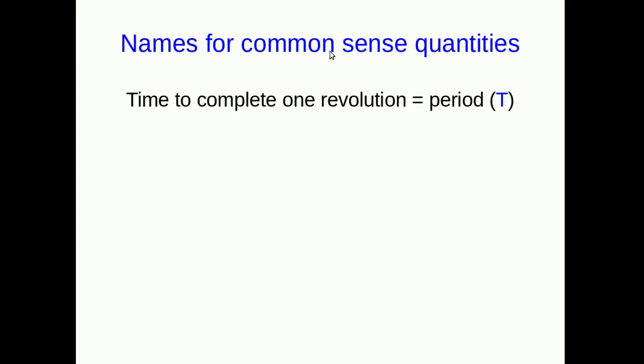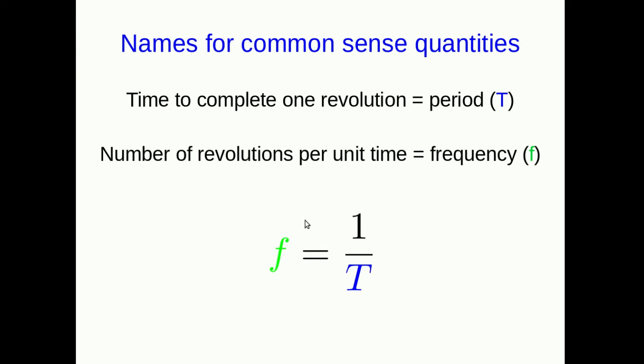We can just see that they always must be related this way. The frequency is just the period turned on its head, one over the period. So we have these common sense quantities for describing revolutions: the time to go once around that we call the period, the number of times you go around per time that we call the frequency. And we've seen that the frequency is just 1 over the period. And the thing I want to stress is that this isn't a formula to remember. This is simply common sense. If you understand what frequency means, you know how to calculate it. And if you know how period is defined, then you know how to calculate it. And if you know how to calculate them both, you can just see that this relation is correct.